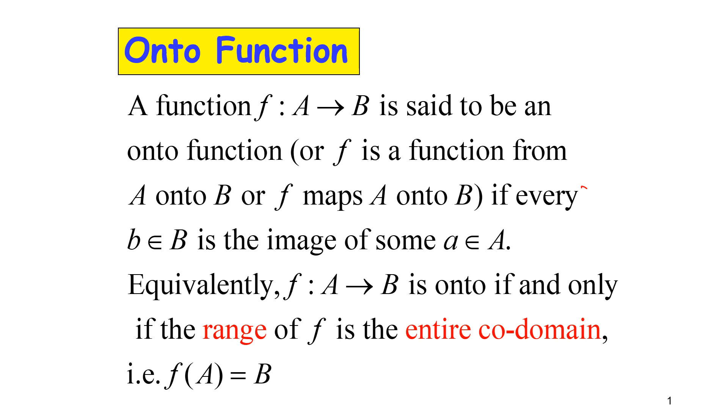Equivalently, f from A to B is onto if and only if the range of f is the entire codomain. In example, f of A is equal to B.